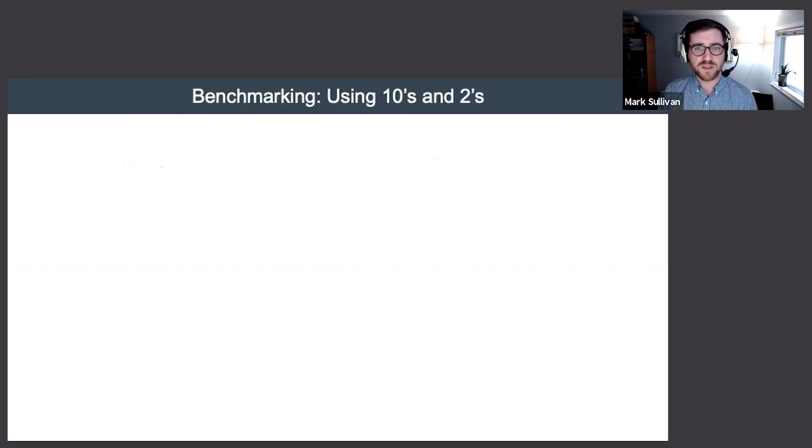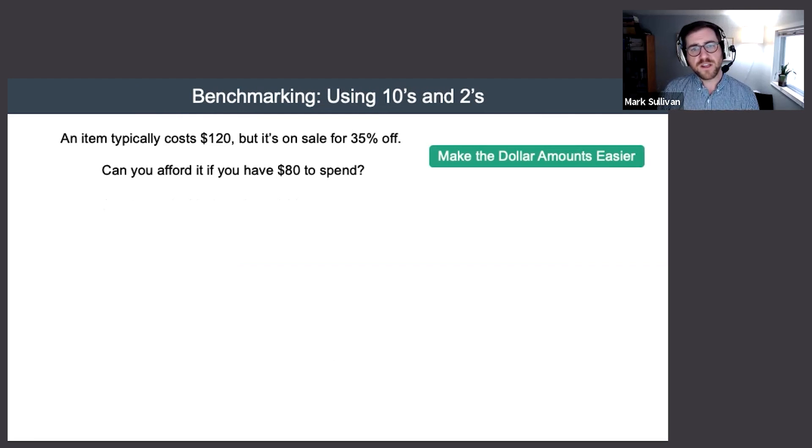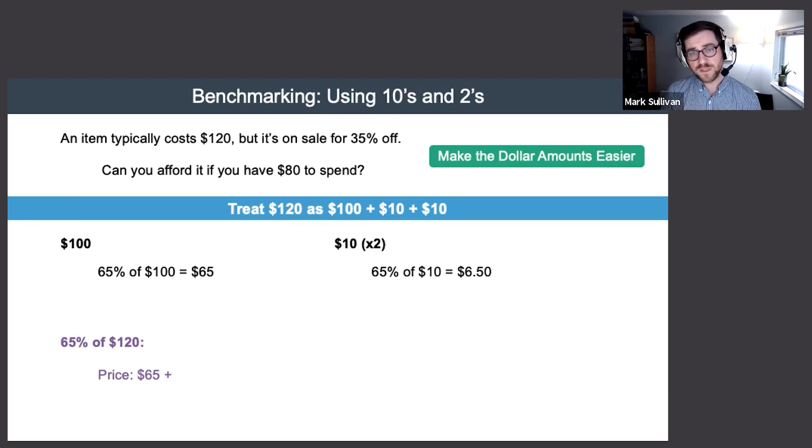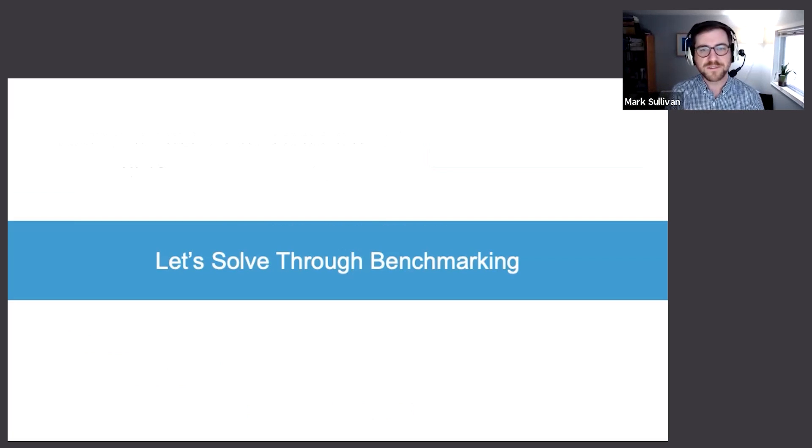But these numbers are such a mess. So let's split it out into multiple easier computations. There are several good ways to do this, but I'll show you one. I could make the dollar amounts easier. I could take the $120 and break that out as a hundred and then two tens. It's not 35% that's easy to compute for each of those. I want to take off 35%, I'm going to land at 65%. 65% of a hundred is 65, 65% of 10 is going to be 6.5, so double that to get to 13. And the price is going to be 65 plus the 13, taking us to 78. So you've got $80 in your pocket, you do have enough to afford to make that purchase.